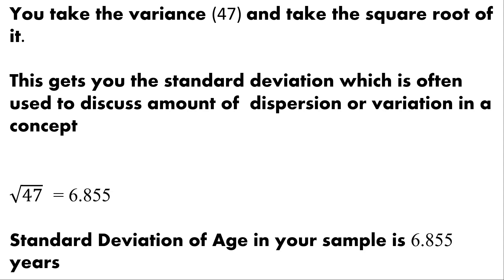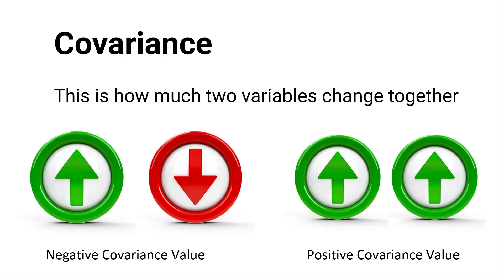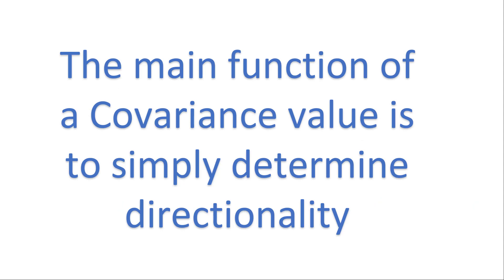Now we're going to talk about what covariance is. Covariance is really just how much two variables change together. When one goes up, does the other go down? If one goes up, does the other go up? For instance, if anxiety goes up, my happiness would probably go down — they're moving in opposite directions. Where if anxiety goes up, fear would probably go up as well. When two concepts move in opposite directions, that's a negative covariance value. If they're both moving together, that's a positive covariance value. The main function of a covariance value is simply to determine directionality — which direction is it moving?